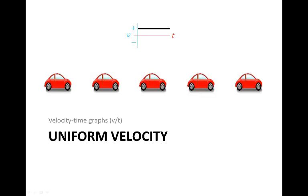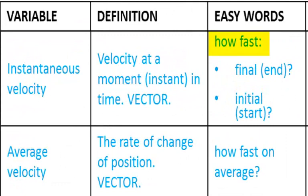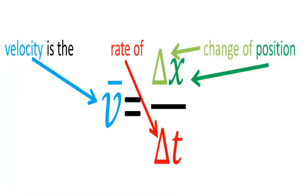Let's look at velocity time graphs for uniform velocity. Velocity means how fast something's going, the rate of change of position, delta x over delta t.